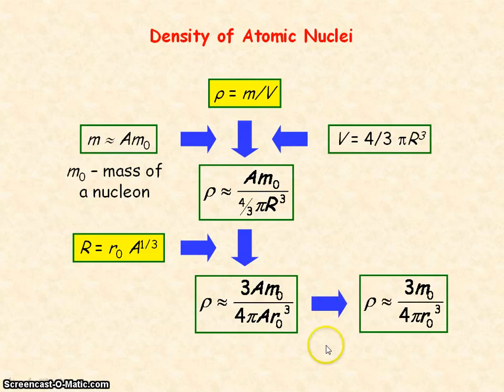So we're left with a density equaling 3 times the mass of a nucleon divided by 4 pi R0 cubed. So the density is independent of the nuclear number.